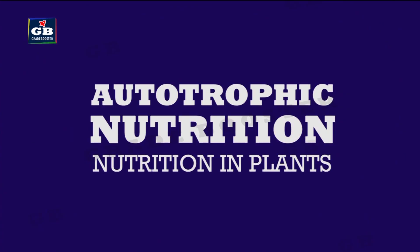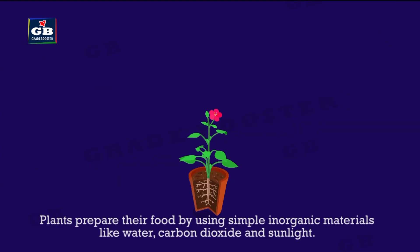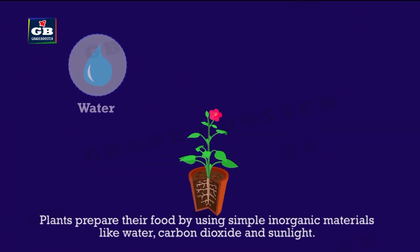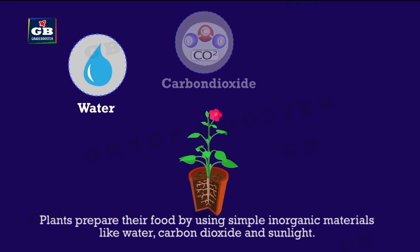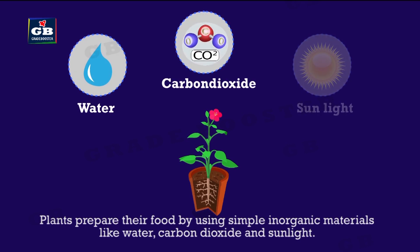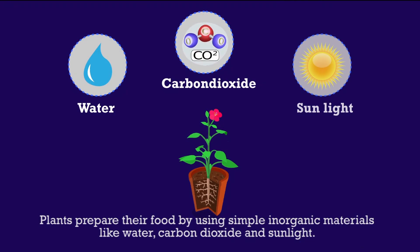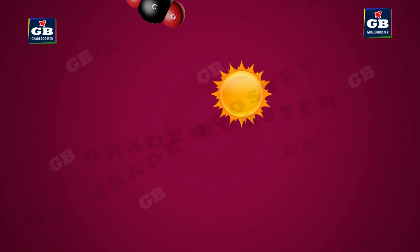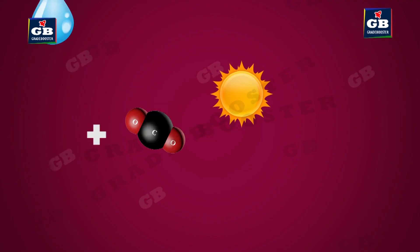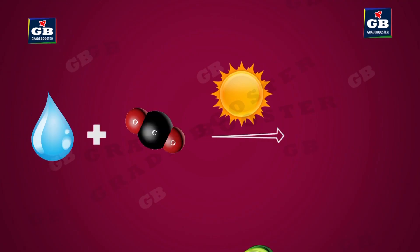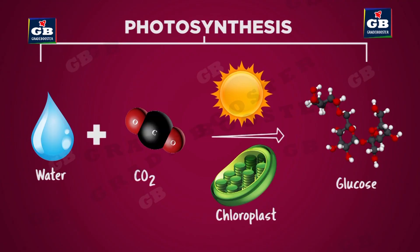Nutrition in Plants. Plants prepare their own food by using simple inorganic materials like water, carbon dioxide, and sunlight. This process is called photosynthesis.